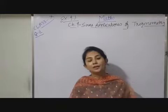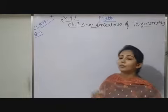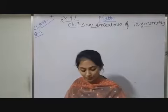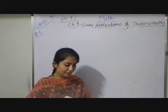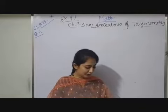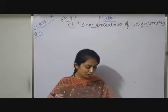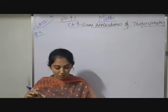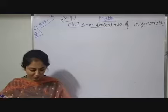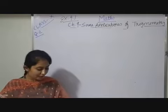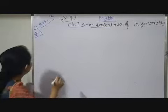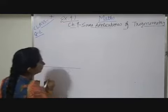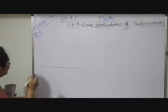Hello children. Now here I will discuss the second question of your exercise 9.2. Here your question is: a tree breaks due to storm and the broken part bends so that the top of the tree touches the ground making an angle of 30 degrees. Let this one be the ground. Observe here how to draw a diagram.